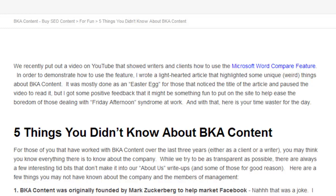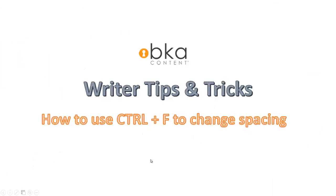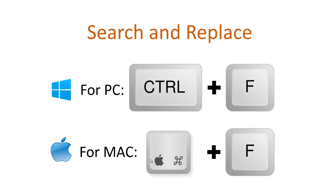So let's go over exactly how to solve this problem if you're a double spacer like me. The first thing you'll need to understand is that we're using Ctrl-F to do this. On a PC, you're going to use Ctrl-F to find and replace. On a Mac, you're going to use the Command key with F to find and replace. So let's go ahead and open up a Word document to show you how this would work.